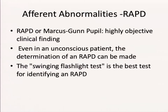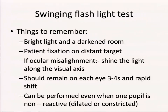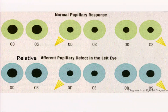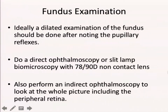Pupil reactions need to be assessed for light and for near. RAPD is one of the most important pupillary signs — in fact, one of the most important signs in neuro-ophthalmology. It's the first and most sensitive indicator that something is wrong with the anterior visual pathway, particularly the optic nerves, though retinal conditions, dense amblyopia, and severe glaucoma can also cause it. The correct way to test RAPD is the swinging flashlight test: ask the patient to fixate at a distant object in a relatively darkened room, shine a bright light for three to four seconds in one eye, then quickly swing it to the other. If the pupils dilate when the light swings to one eye, that eye has an RAPD.